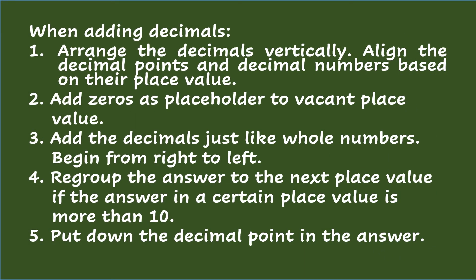When adding decimals: arrange the decimals vertically. Align the decimal points and decimal numbers based on their place value. Add zeros as placeholders to vacant place values. Add the decimals just like whole numbers, beginning from right to left. Regroup the answer to the next place value if the answer in a certain place value is more than ten. Put down the decimal point in the answer.